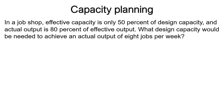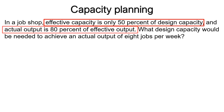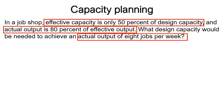Another problem: In a job shop, effective capacity is only 50% of design capacity, and actual output is 80% of effective capacity. What design capacity would be needed to achieve an actual output of 8 jobs per week? From the problem, we have a relationship between effective and design capacity, and another relationship between actual output and effective capacity, with actual output given and design capacity to be found.